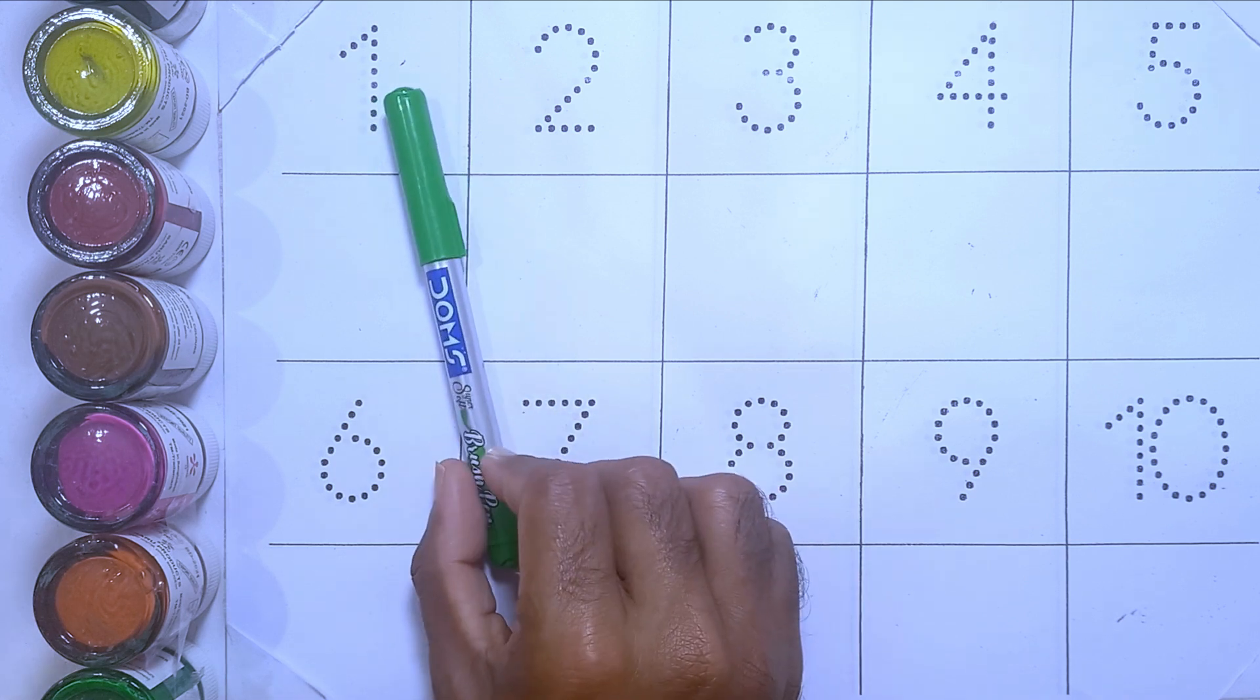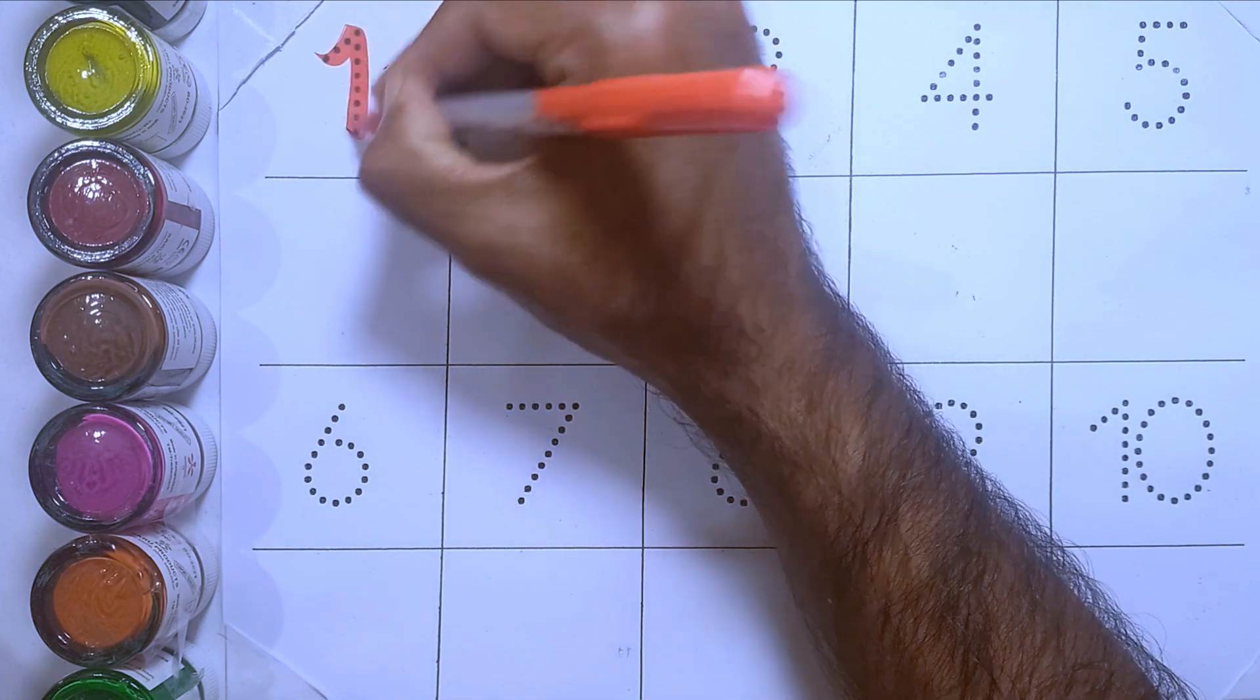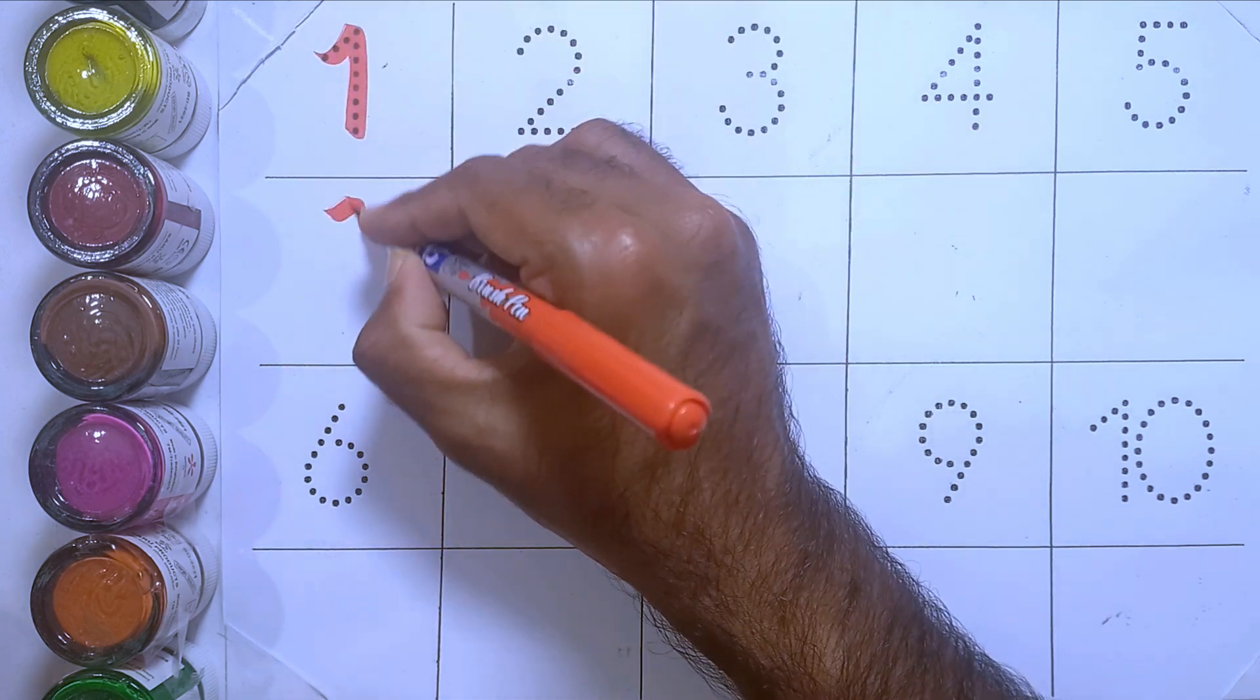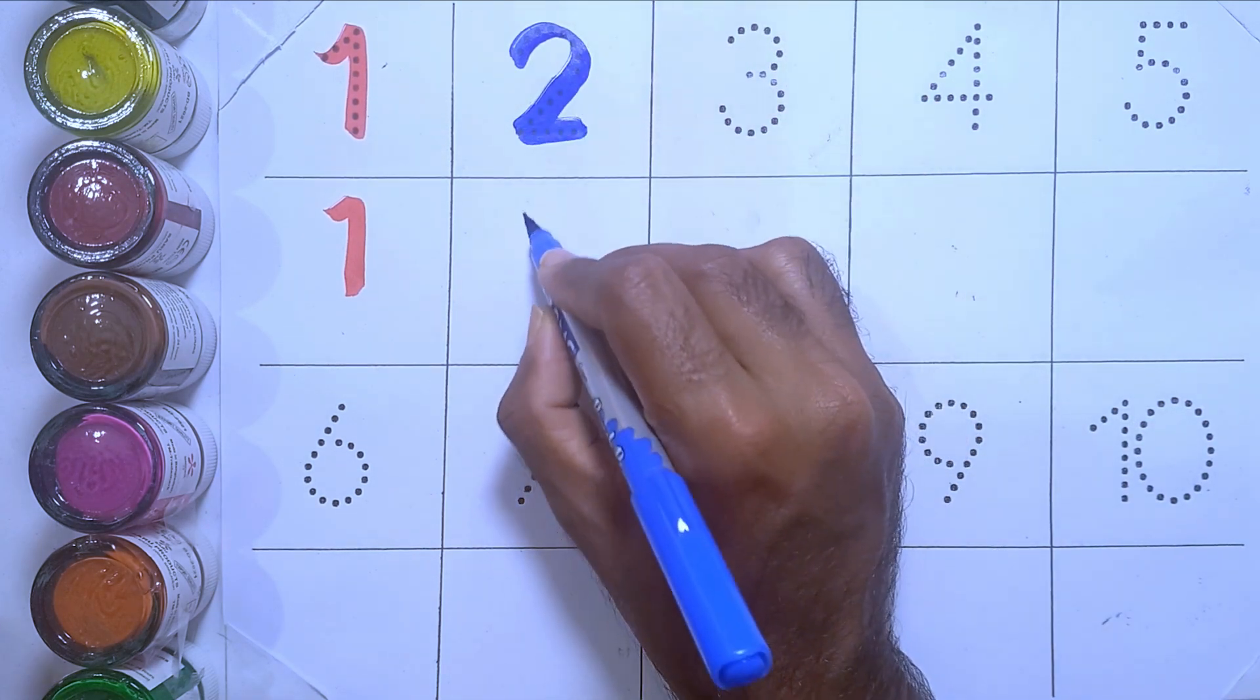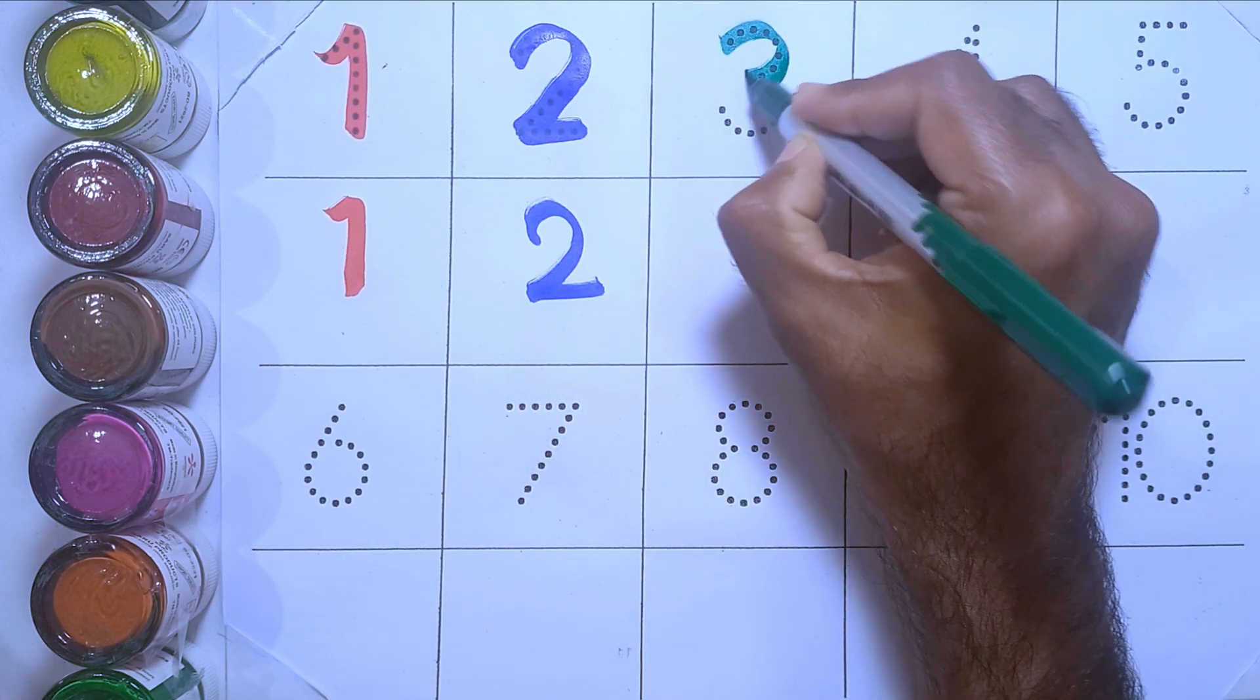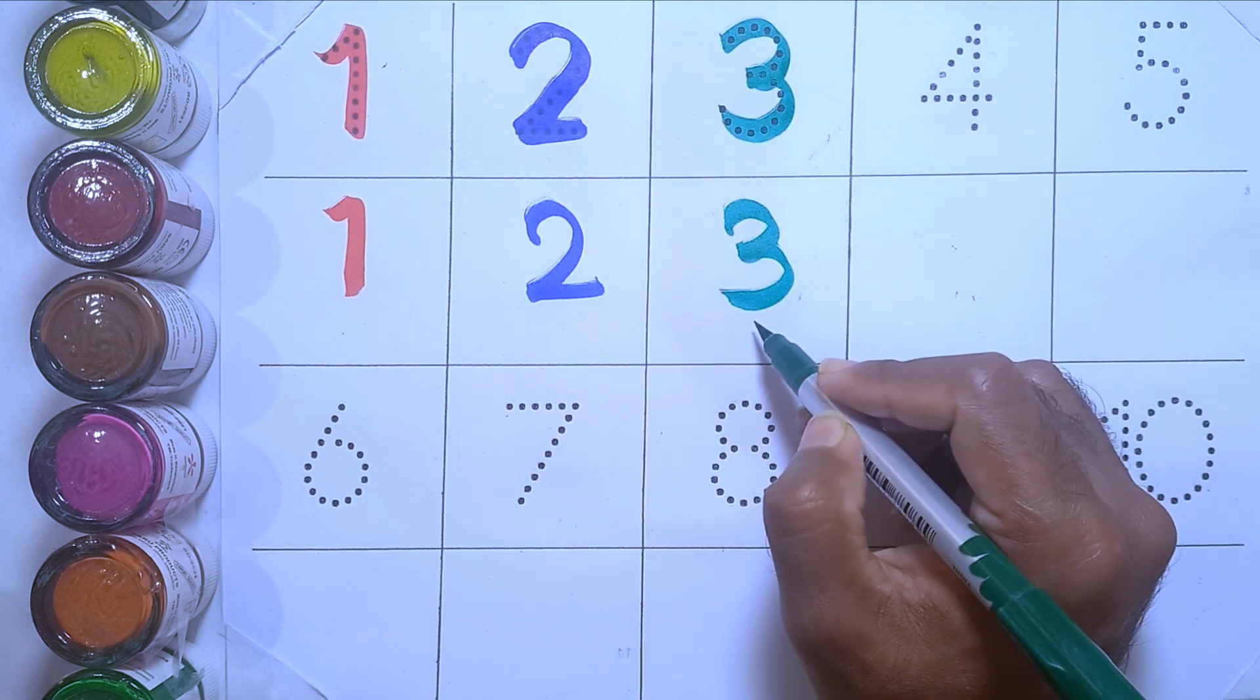Green color. One: o-n-e, one. Two: t-w-o, two. Three: t-h-r-e-e, three.